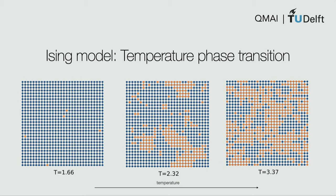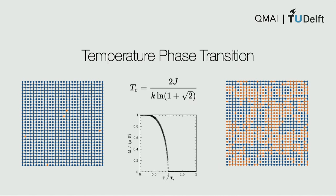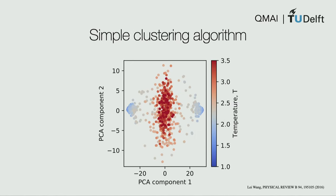Going back to the temperature transition: at different temperatures you can draw these up-down samples and calculate the phase transition — maybe someone taught you the Onsager solution or some renormalization group stuff, and you get this formula analytically. In 2016, Lei Wang did something very simple but super brilliant — one of my favorite machine learning and physics papers of all time. He took these Ising configurations, used a super simple clustering algorithm, and when you plot the configurations on two axes — the two components of the clustering algorithm — you get a plot where, if you color the points by temperature, you get a big cluster in the middle and two blue clusters on the sides. Why are there two? Because when you're cold, you are either all aligned up or all aligned down — the Z2 symmetry means there are two ground states.